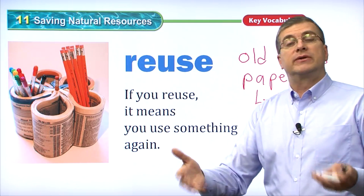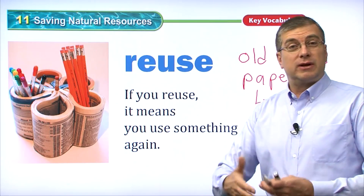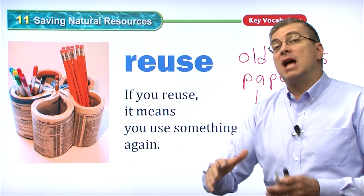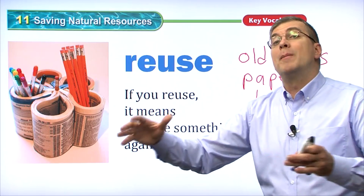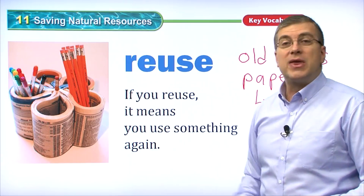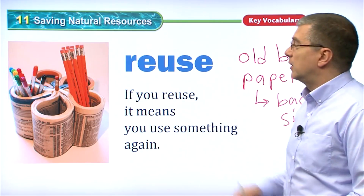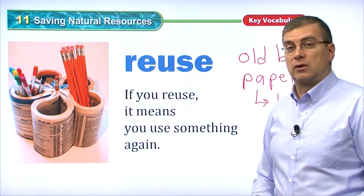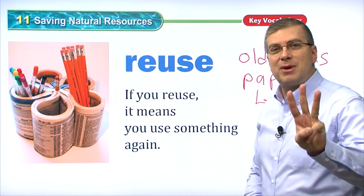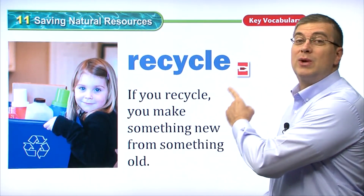If you reuse the things we have, we can use them for a longer time. We can save and not use so many things — we can save on the things we use. This is our second way: reuse. Do you remember the third way to conserve? That's right, it's recycle.